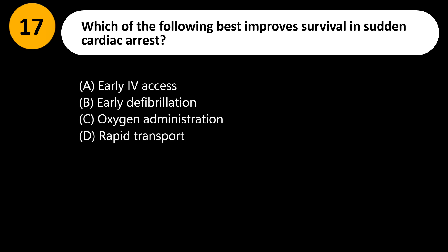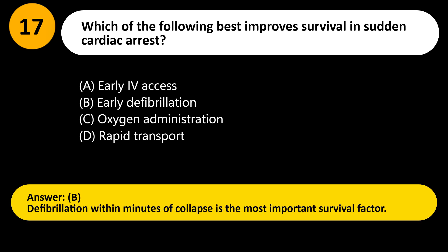Which of the following best improves survival in sudden cardiac arrest? A) Early IV access, B) Early defibrillation, C) Oxygen administration, D) Rapid transport. Answer: B. Defibrillation within minutes of collapse is the most important survival factor.